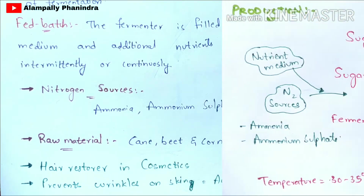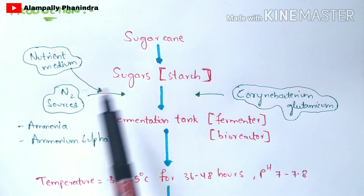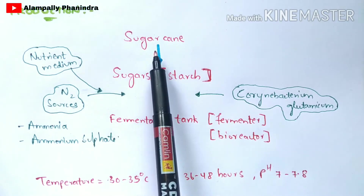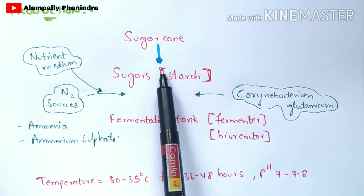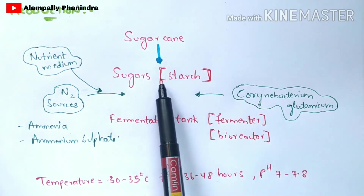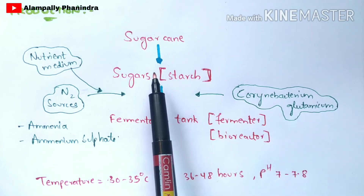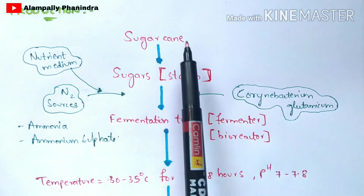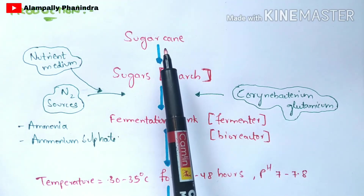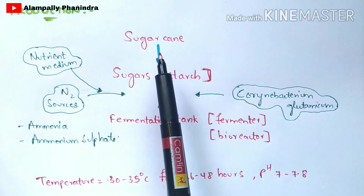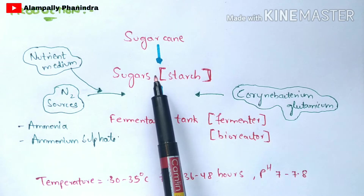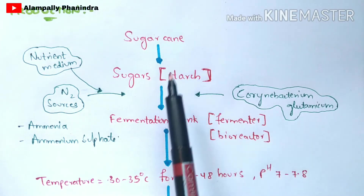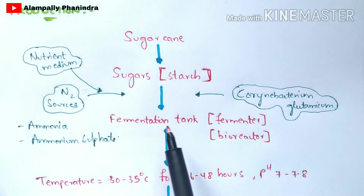Now let us discuss how glutamic acid is produced. First, you take sugarcane, cut it into pieces, and obtain sugarcane juice from it. The main aim of fermentation is to convert primary metabolites — in this case the carbohydrate source — into secondary metabolites. After obtaining the juice, you clean the fermenter tank with water to avoid contamination.